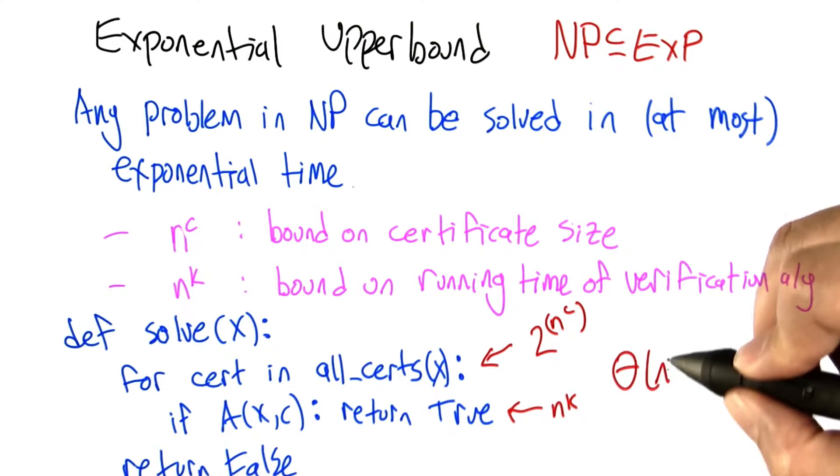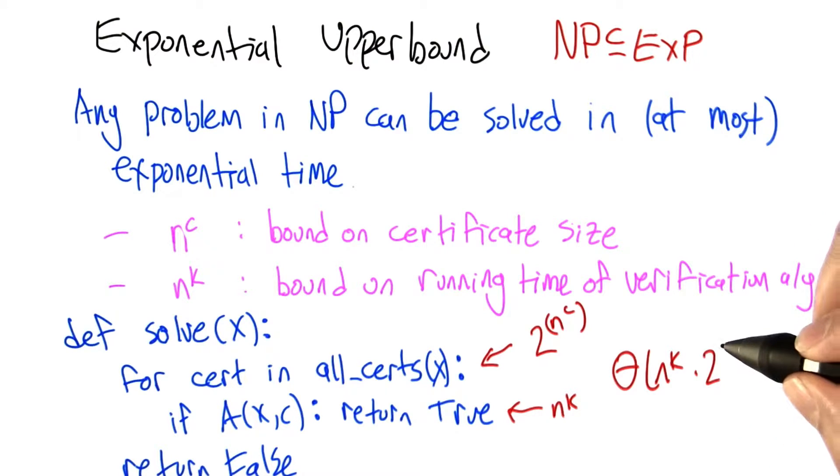So the total running time is like n^k, which is a polynomial, times 2^(n^c), which is exponential. So the total running time is exponential. It's not worse than exponential. It's not great.